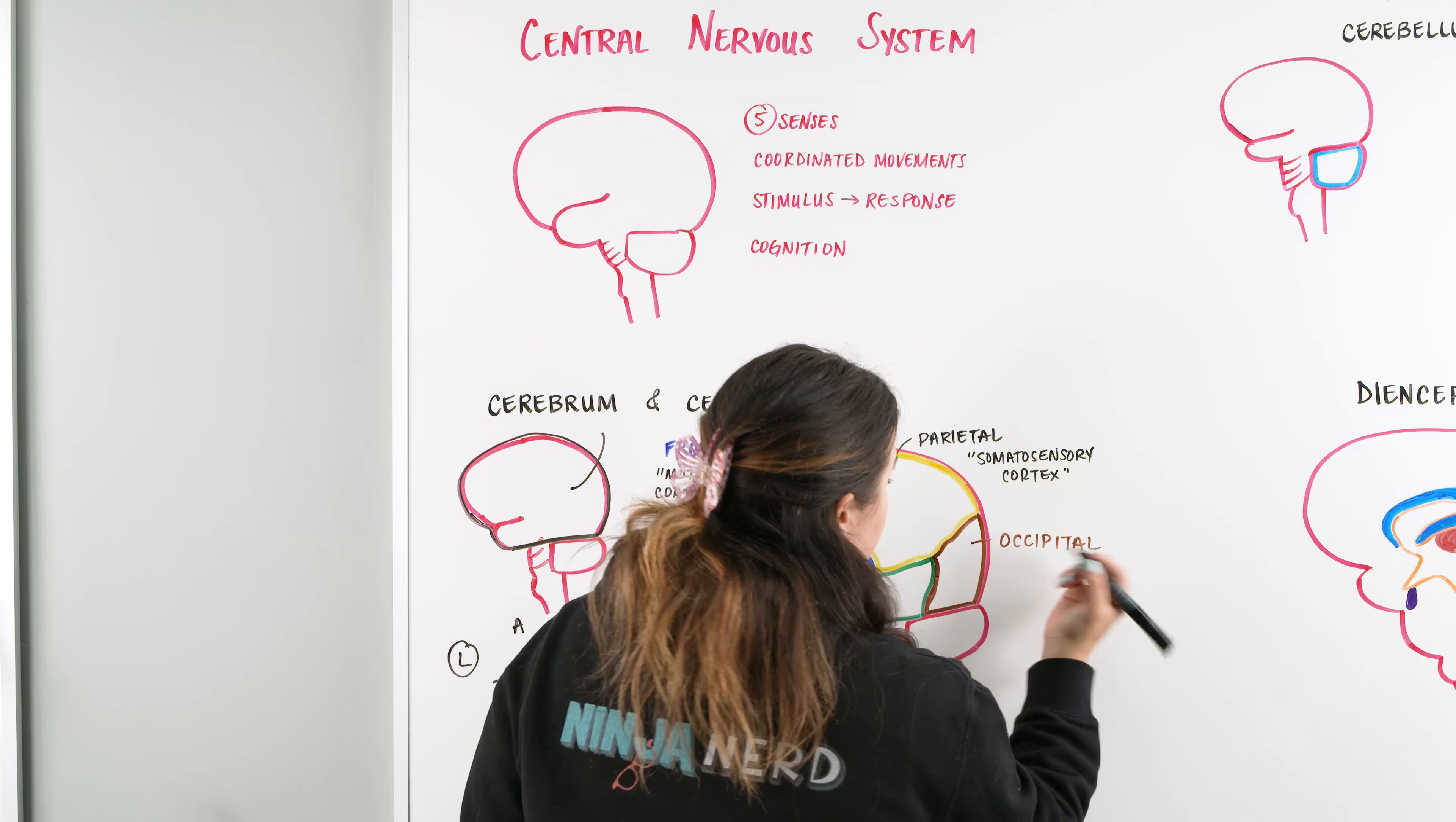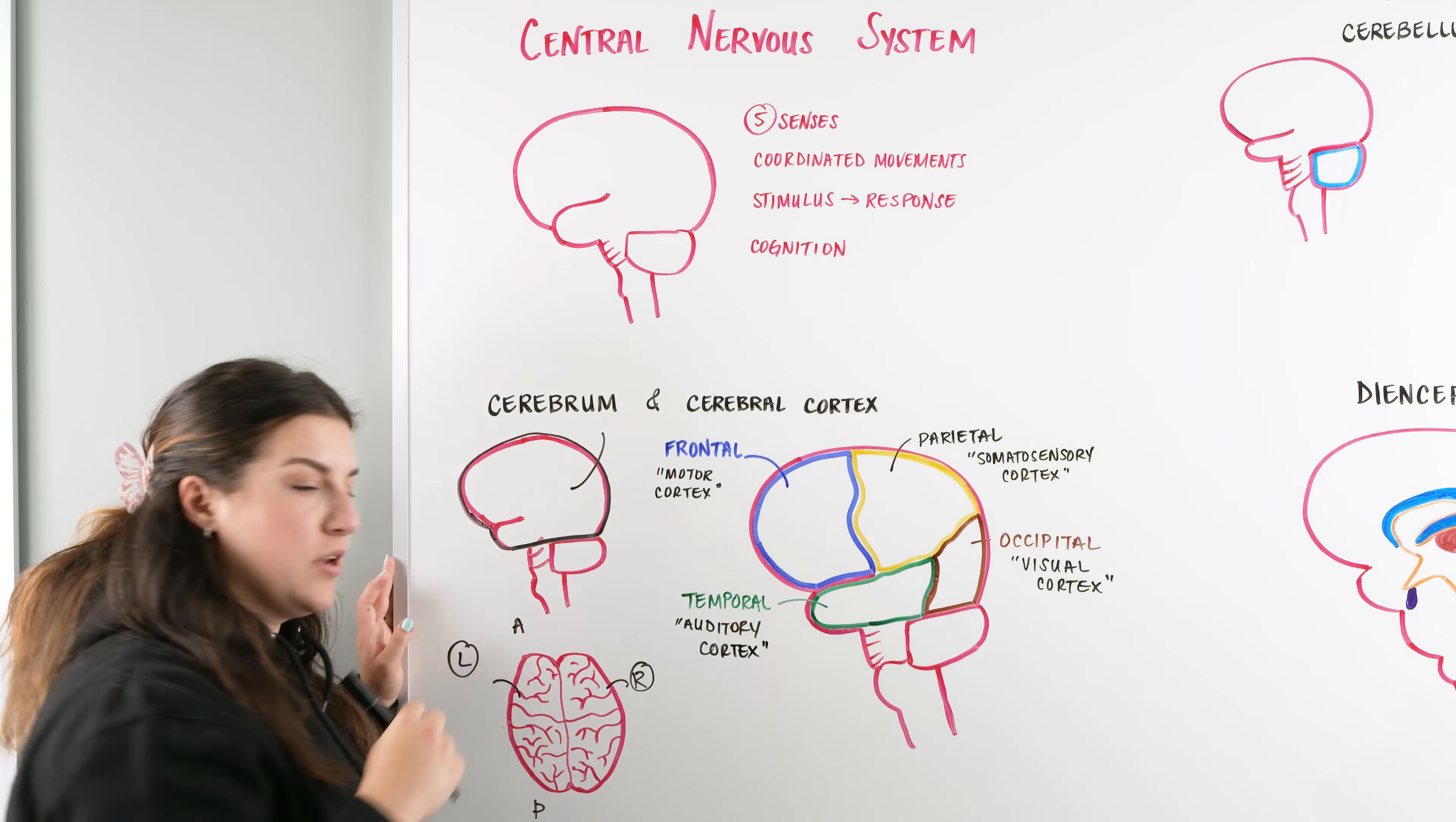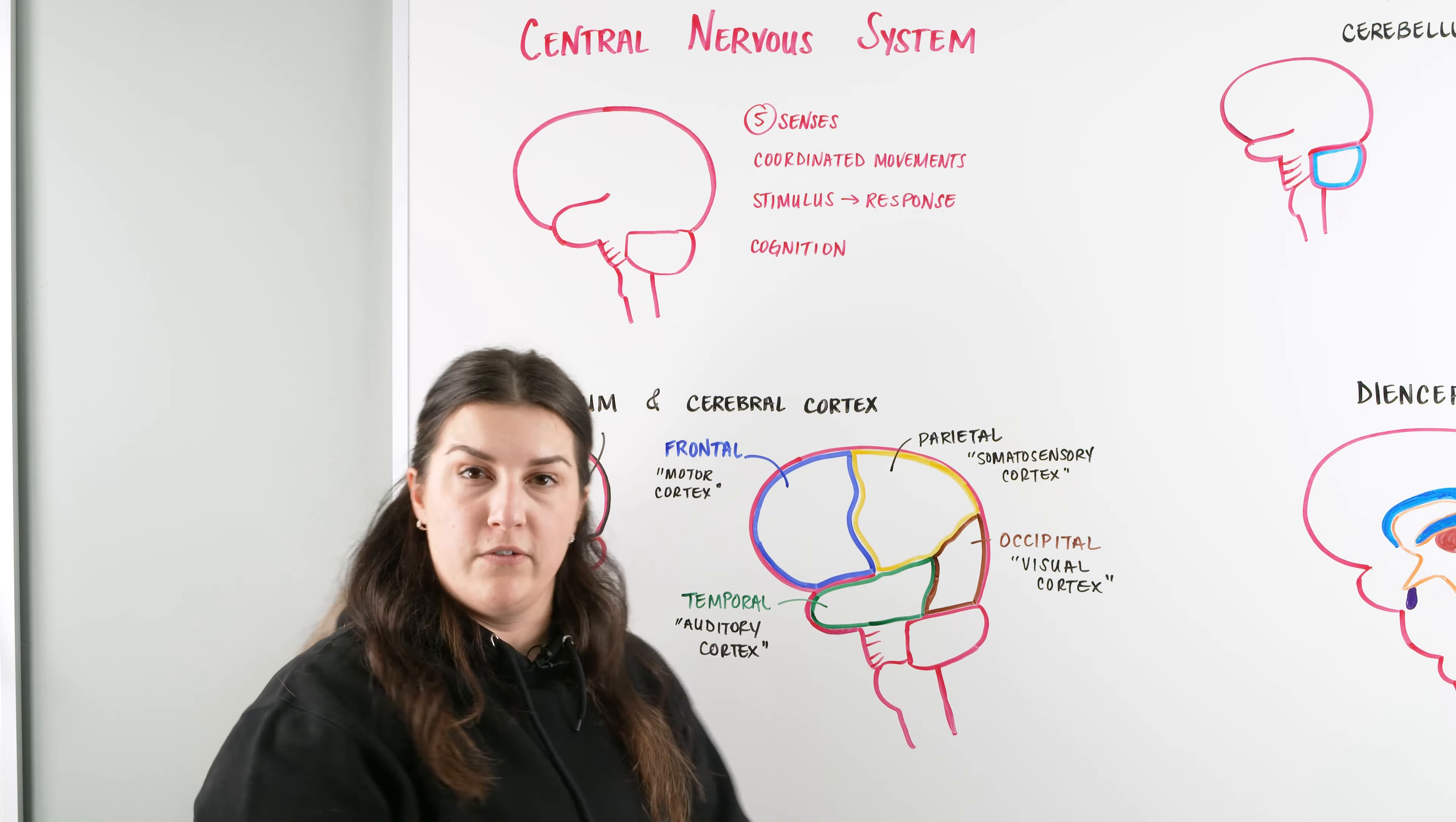Occipital is our vision or visual cortex. Any type of stimulus with the eyes, we're going to interpret with our occipital lobe. Our temporal is right down here, and that's where we get a lot of our auditory cortex. This is going to help us listen and also create language. From this one section of the brain, we can get a lot of different components of movement, senses, and cognition.